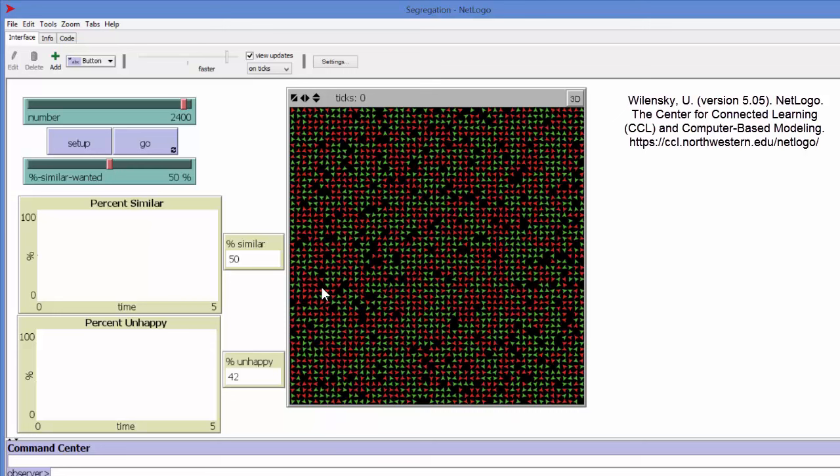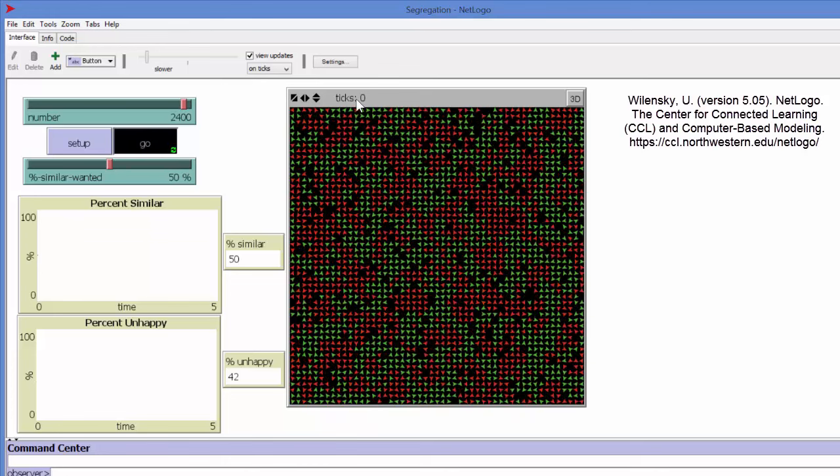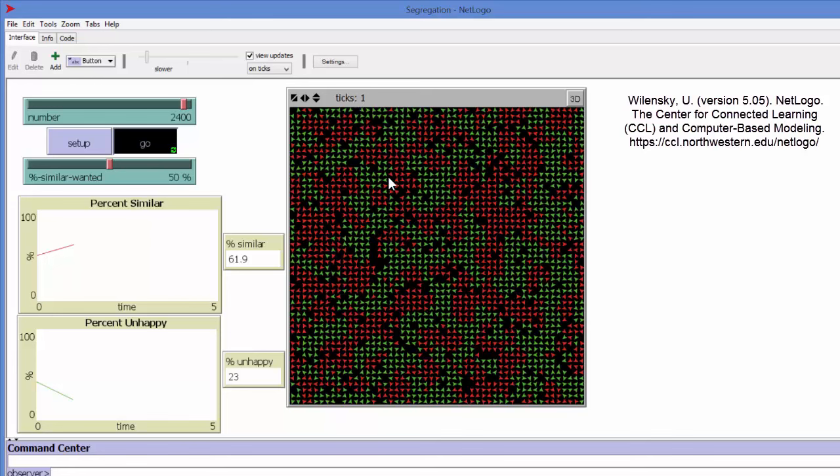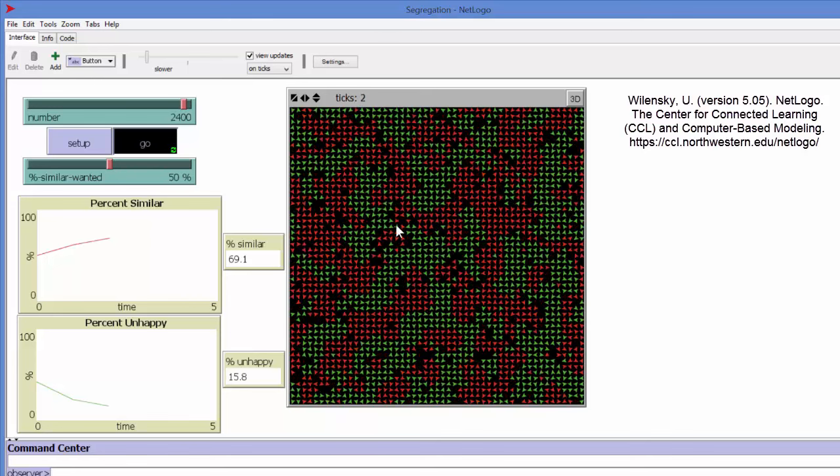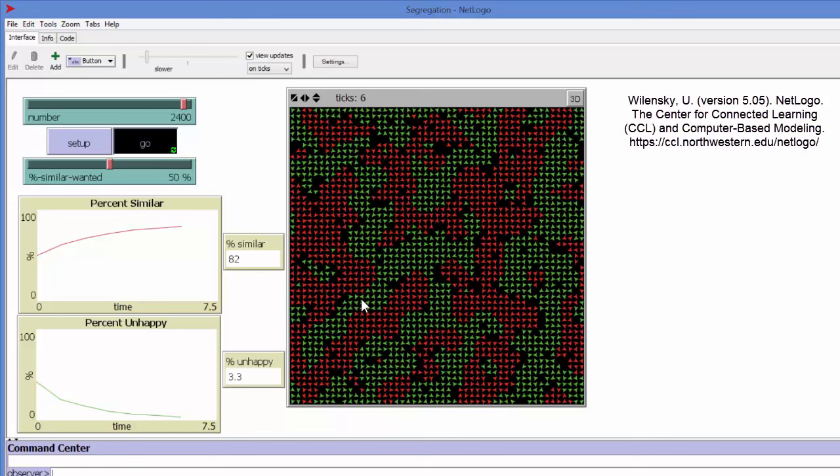If you're happy now, and if you're then not happy, move to the next free space and reevaluate your situation. We program, set up the game, and say go. We see the ticks are the time periods that pass, and every time period people are reevaluating. The unhappiness is going down very quickly. People are ever more happy, they fulfill the criteria that 50% of the neighbors are like them. But what happens to the level of similarity, the level of segregation?